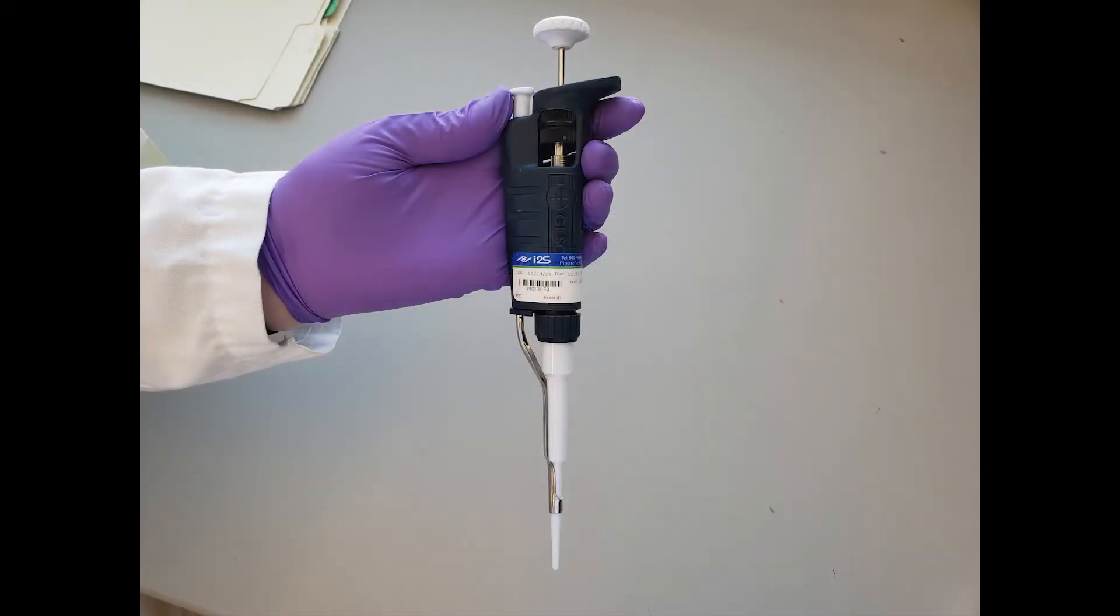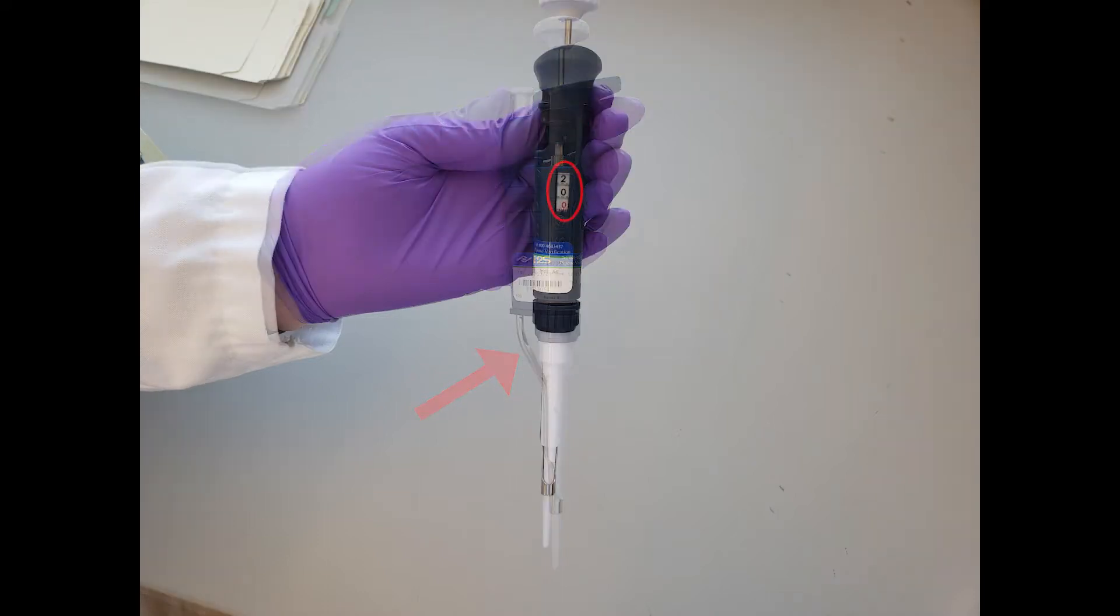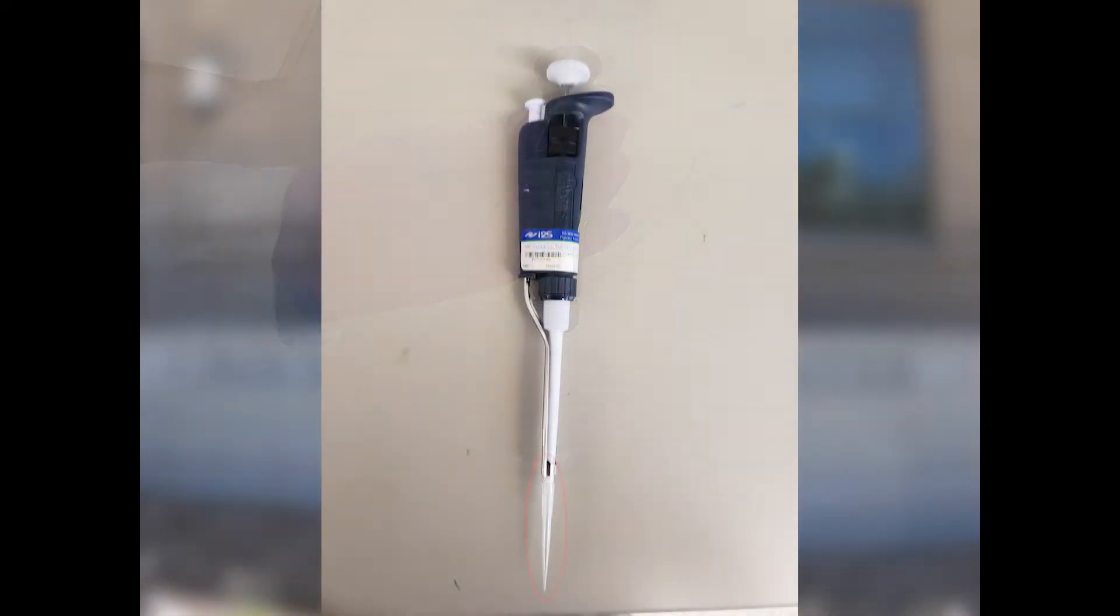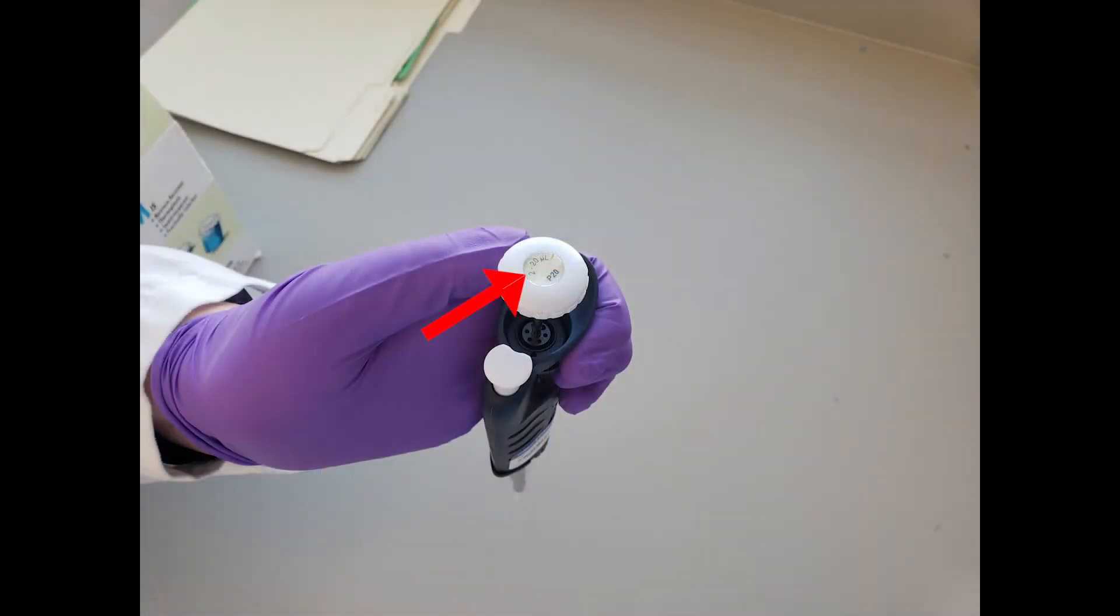This type of pipette consists of the following seven parts: the shaft, the volume adjustment dial, the ejector arm, the volume readout, the disposable tip, the tip ejector button, and the plunger. On the top of the plunger, there is a label which indicates the volume range for a particular micropipette.